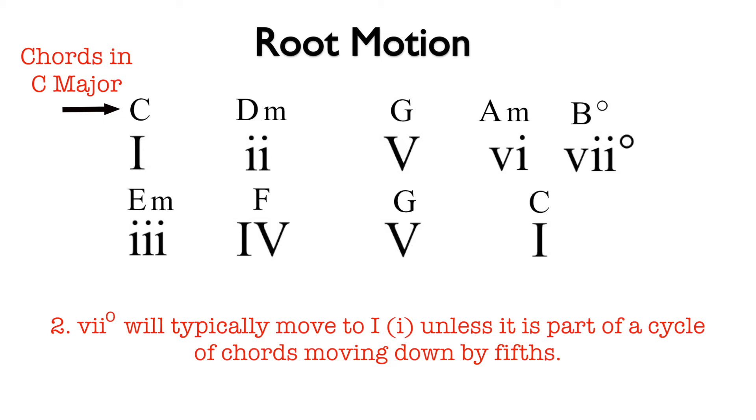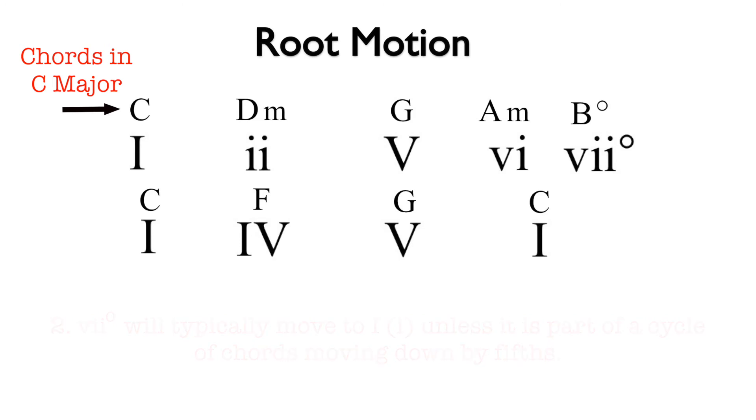We have two choices. Since seven diminished typically moves to one, we can replace three with one. Since one can go anywhere, one to four is a strong progression. So by replacing the three with one, we are able to modify the progression to fit the parameters of strong root motion.